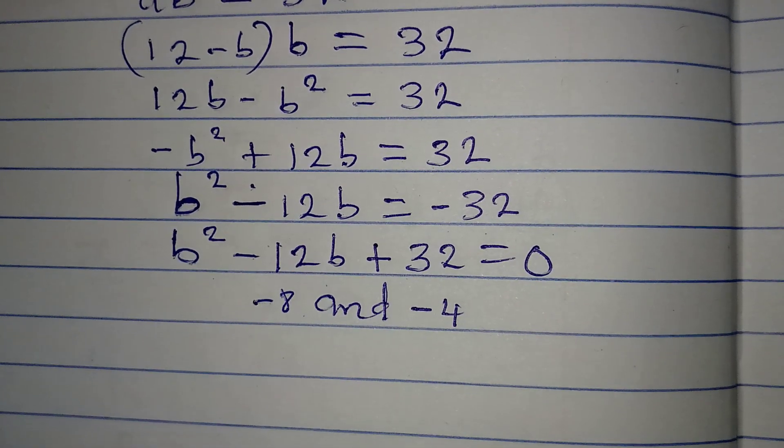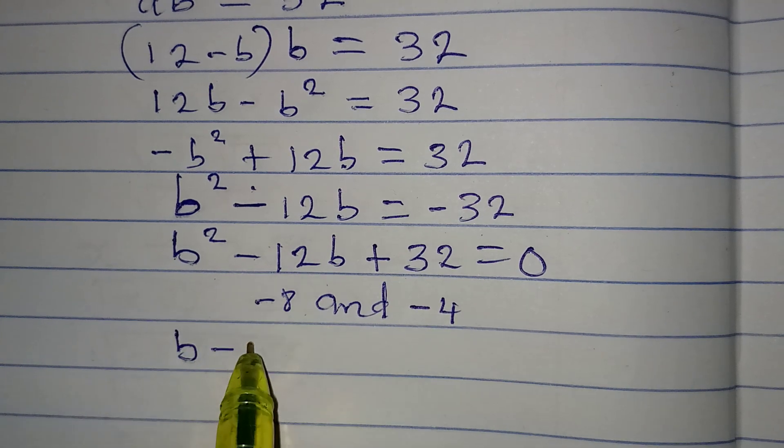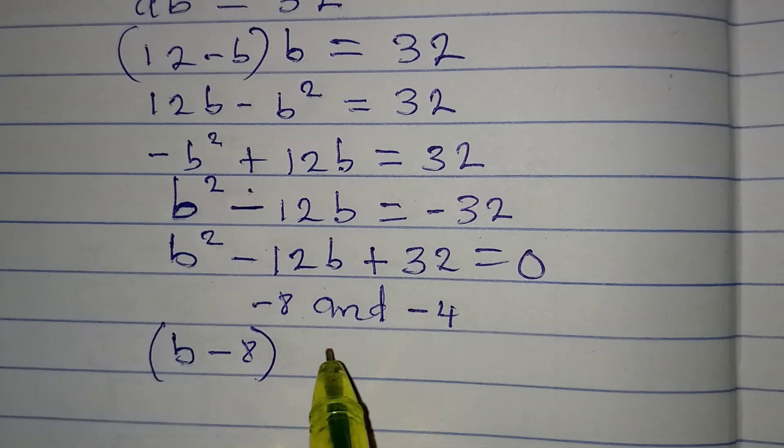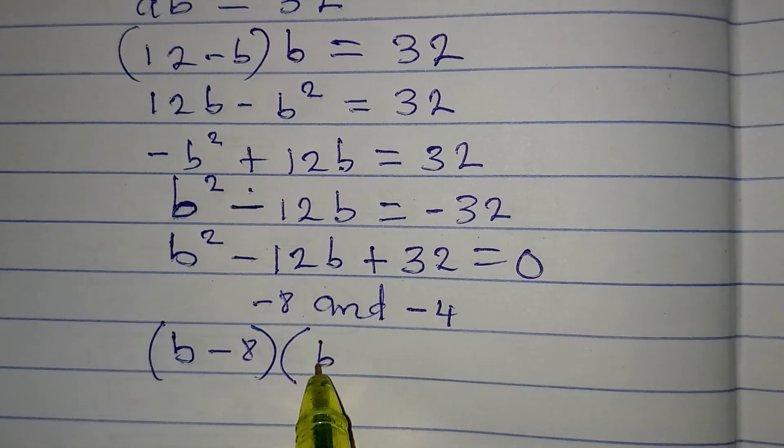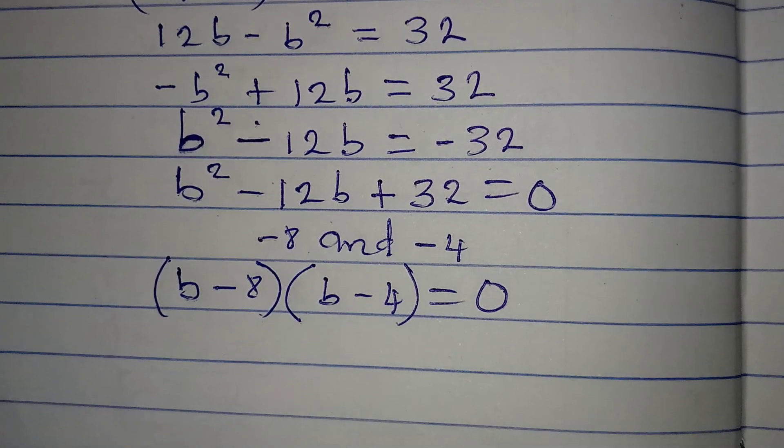So we'll have B minus 8 in one bracket, and in the other we have B minus 4, both equal to 0.